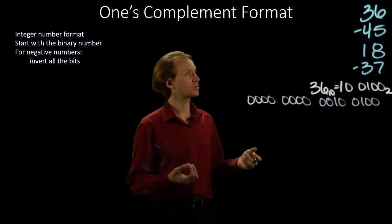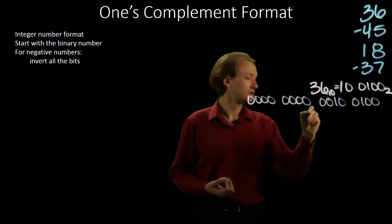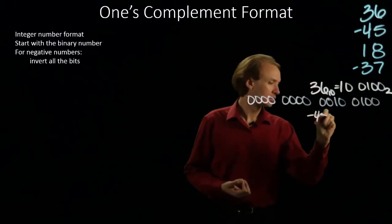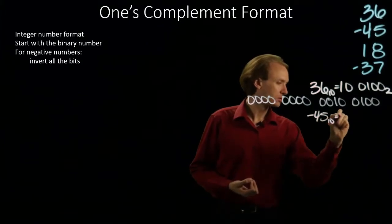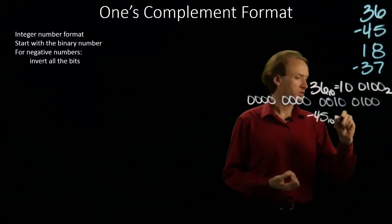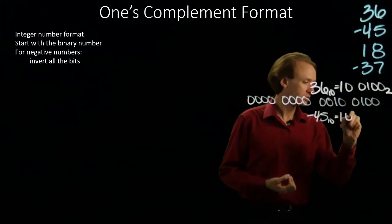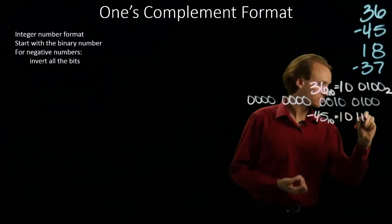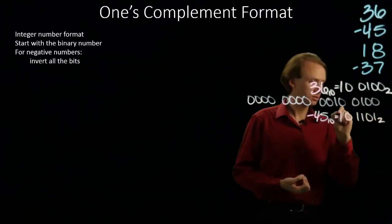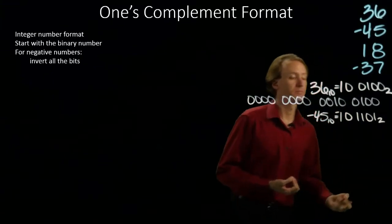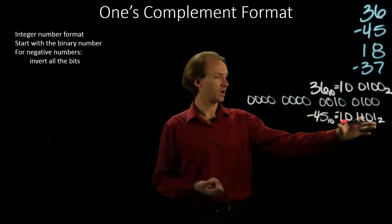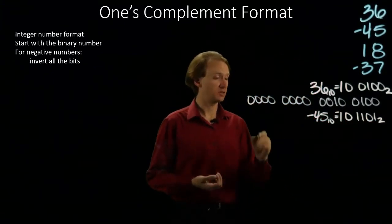My next number is negative 45, which is 32 plus 13. And this is a negative number. So I'll start by writing down my magnitude in 16 bits.